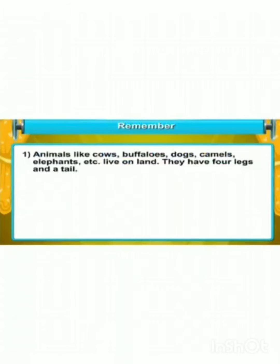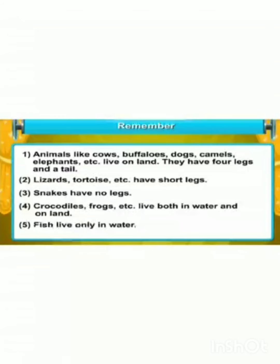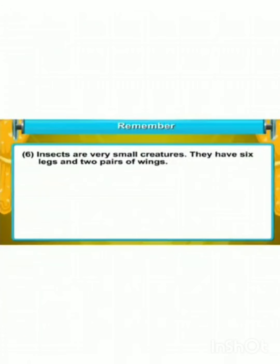Remember: animals like cow, buffaloes, dogs, camels, elephants etc. live on land. They have four legs and a tail. Lizards and tortoise etc. have short legs; snakes have no legs. Crocodiles and frogs etc. live both in water and on land. Fish live only in water. Insects are very small creatures; they have six legs and two pairs of wings.